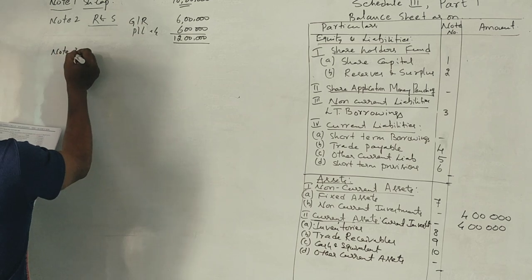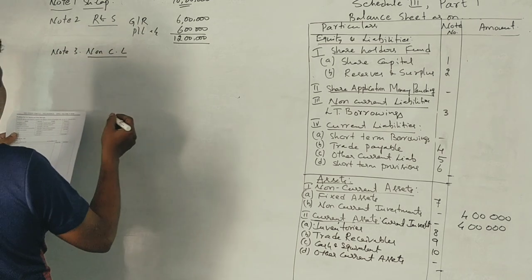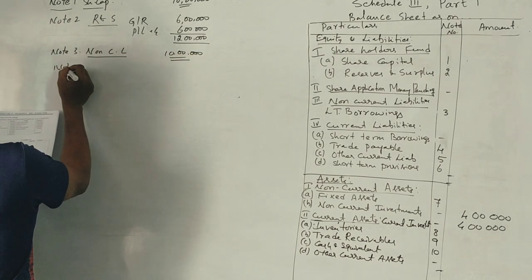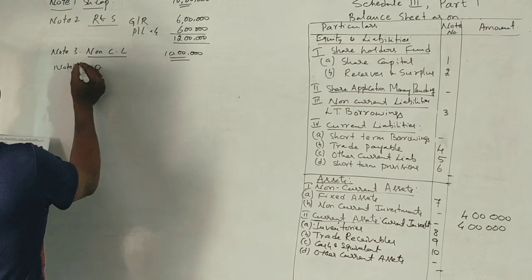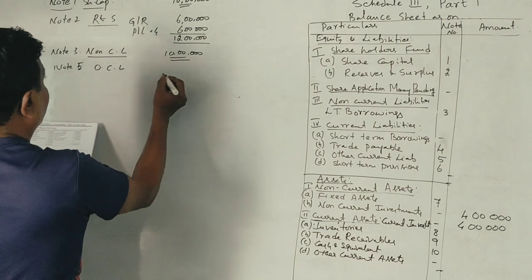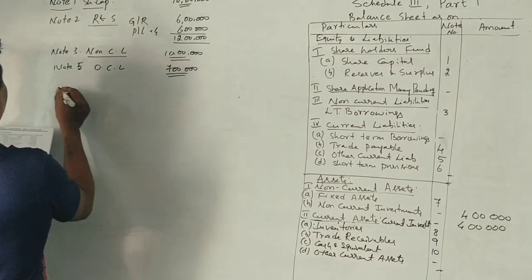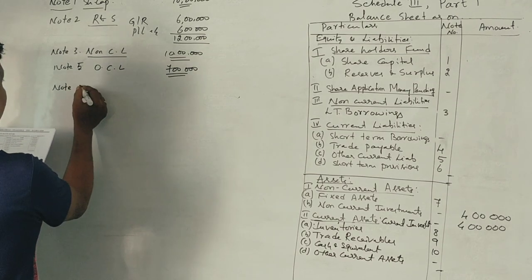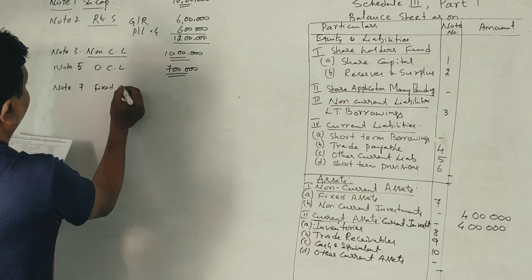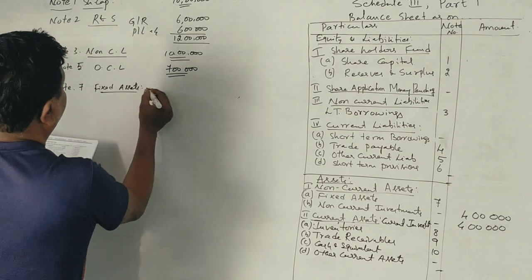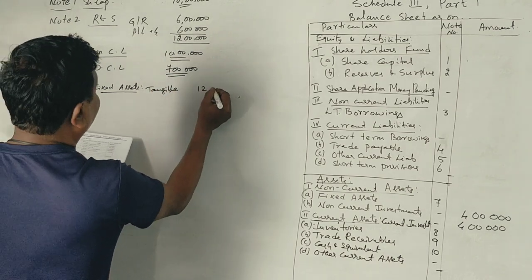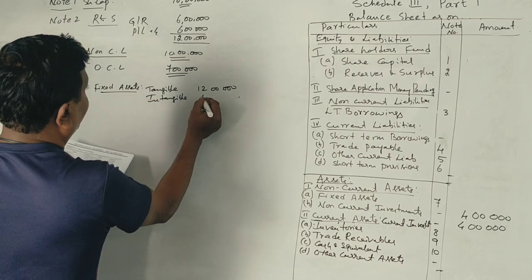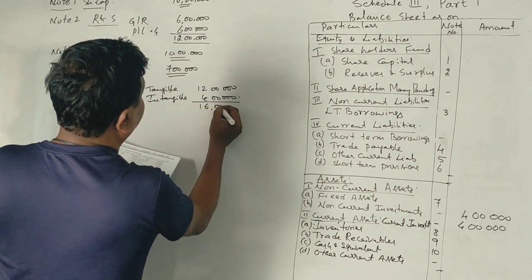Note 7 - non-current liabilities, note number 4, note 5 - other current liability 7, note number 6. Tangible, intangible - total 16 lakhs.